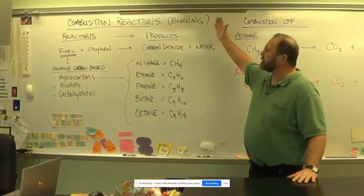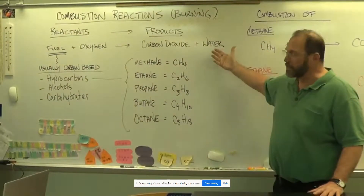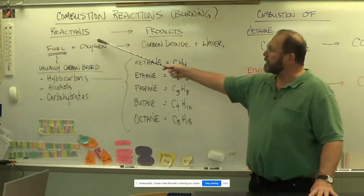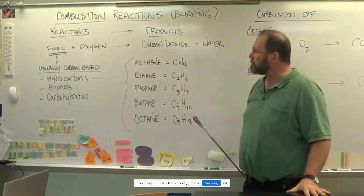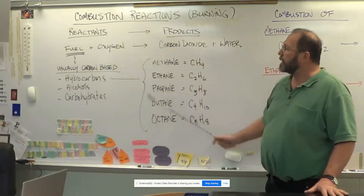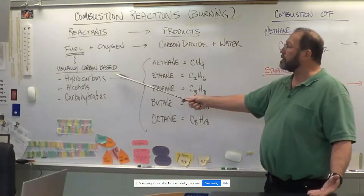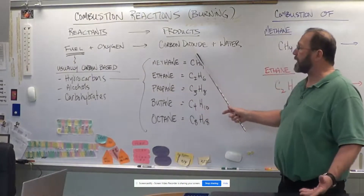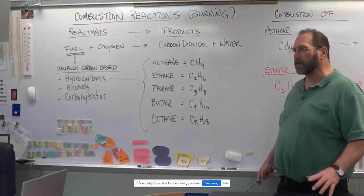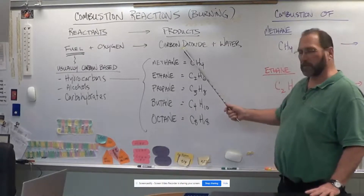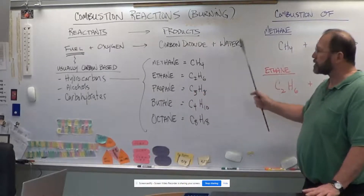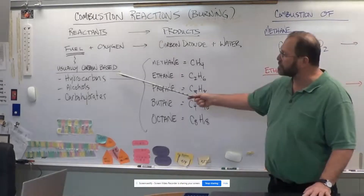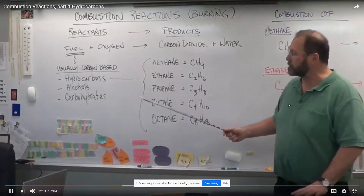A combustion reaction is burning. Every chemical reaction has reactants and products. In a combustion reaction, the reactants are always some kind of fuel — usually carbon-based — and oxygen. Since the carbon-based fuel combines with oxygen, you always get carbon dioxide. With complete combustion you get carbon dioxide; the hydrogen in the fuel combines with oxygen to form water, H2O. We're going to address three different kinds of fuel: hydrocarbons, which we showed with the Bunsen burner.